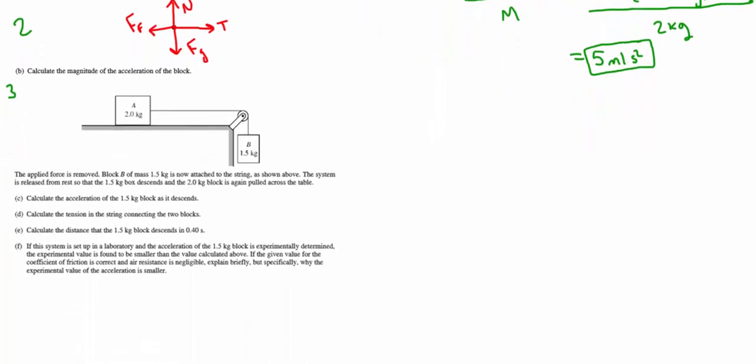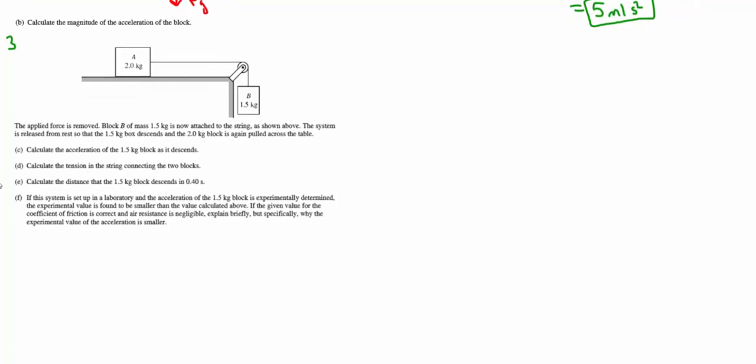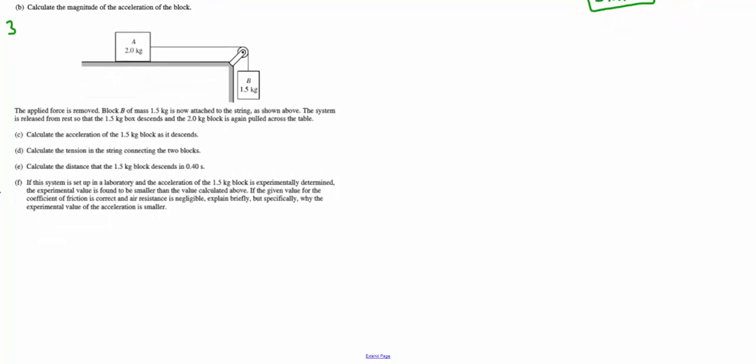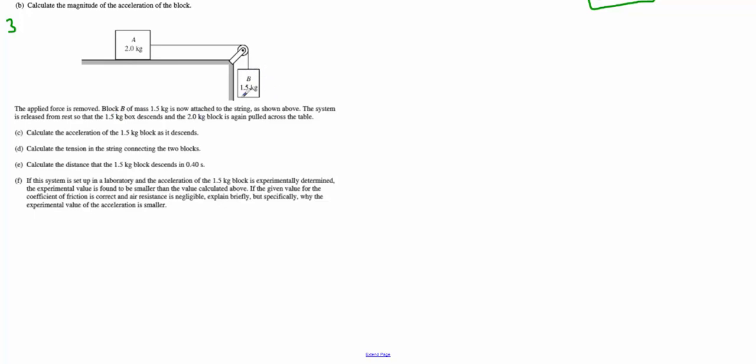Now we're going to kind of change the scenario slightly. Instead of it being an applied force of 15 newtons, it's going to be a block hanging there. And so now we're going to attach this little block of 1.5 kilograms to the pulley. Now, again we're going to release it all from rest. We want to know the acceleration of this little block. Well, if you recall or understand from your dynamics of a pulley system, all objects attached to that pulley system will accelerate together at the same rate. You can't have this block accelerate at a different rate than the big block or else the rope would snap.